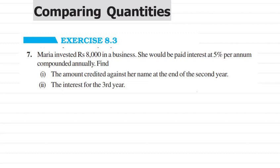This is question number 7 from 8.3. Maya invested rupees 8,000 in a business and she would be paid interest at 5% per annum compounded annually. Here you have to find the amount credited against her at the end of the second year. This question is a little bit different than all the questions we have done, and for the second part you have to find the interest for the third year.